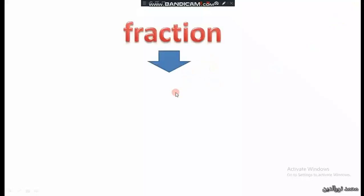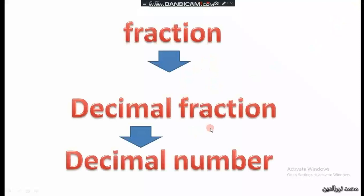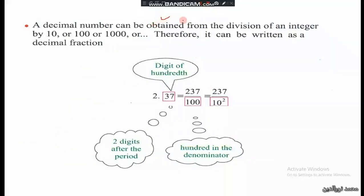From fraction to decimal fraction, and from decimal number to decimal fraction. A decimal number can be obtained from the division of an integer by ten, hundred, or thousand — these are powers of ten — therefore it can be written as a decimal fraction.